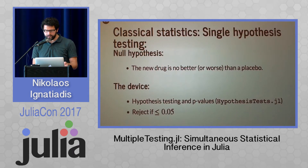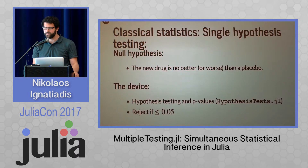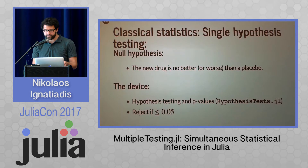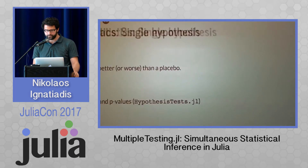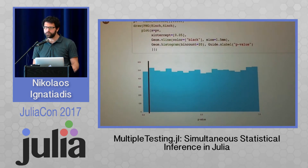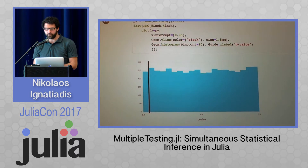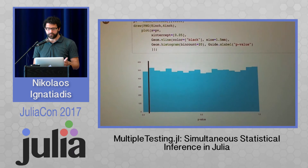The p-value is a random variable, and low values of it indicate evidence against the null hypothesis. Traditionally, the null hypothesis might get rejected if the p-value is less than 0.05. The key property of the p-value is that under the null hypothesis — when it's actually true — it's uniformly distributed.